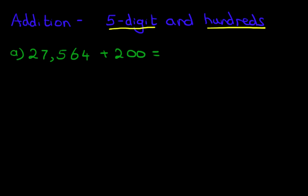So the first step is to rewrite the question in columns. Let's do that here. 27,564 plus 200. Let's put a nice big equal sign over here.